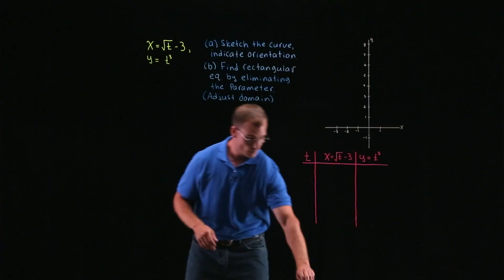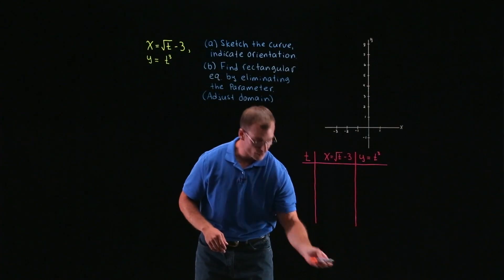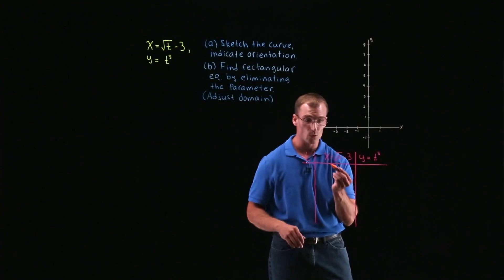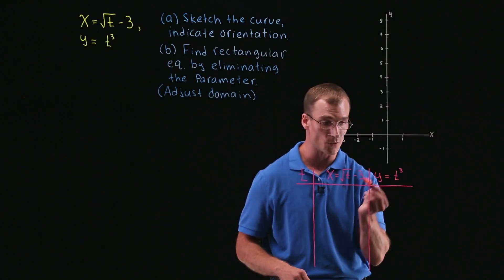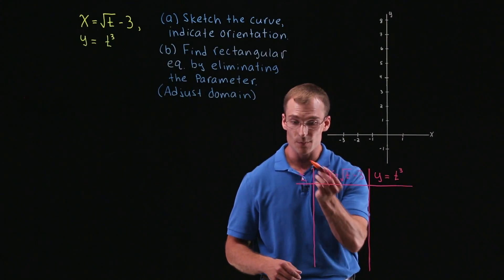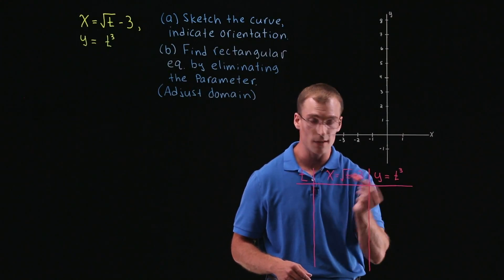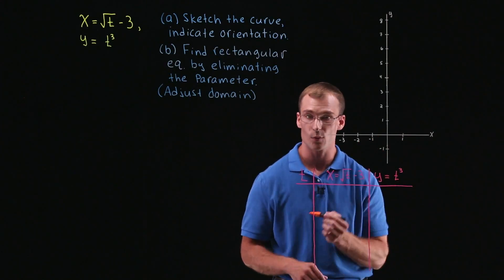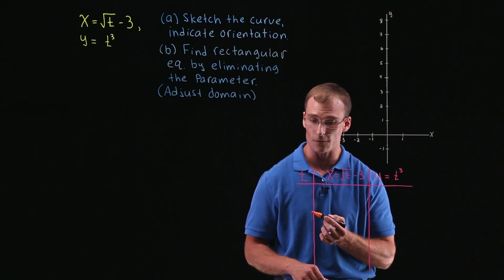So first, let's sketch a curve given by our parametric equations, which we again have as x equal to square root of t minus 3 and y equal to t cubed. What we're going to do here is pick values of t, find the corresponding values of x and y, and then plot the points and try and sketch the curve from there.